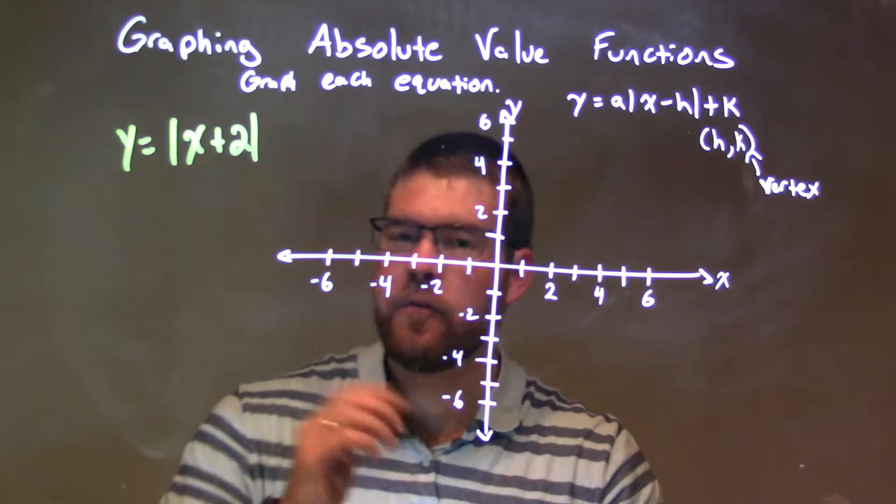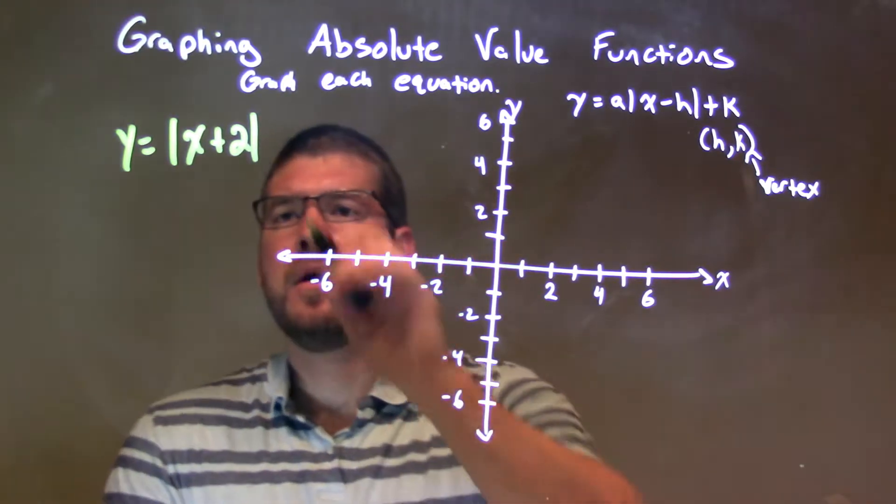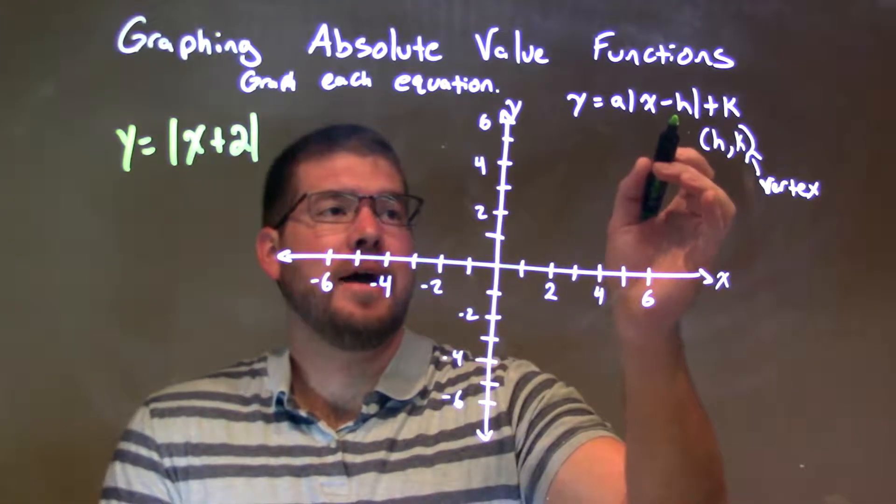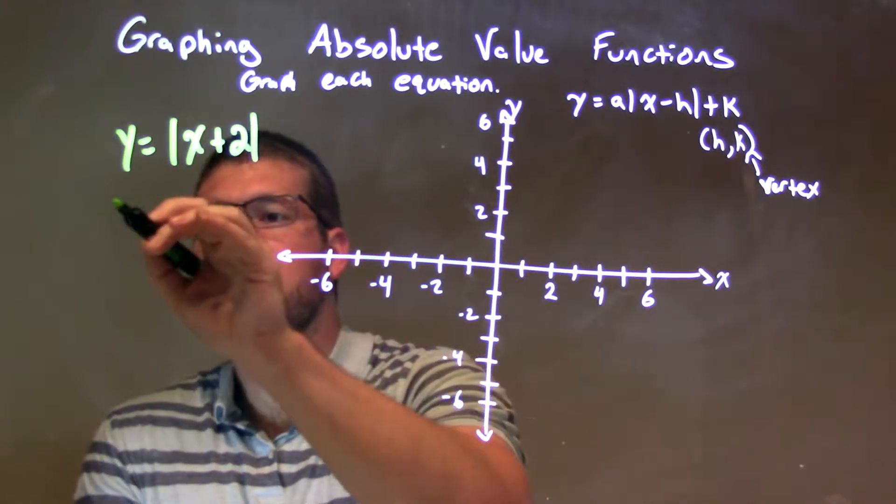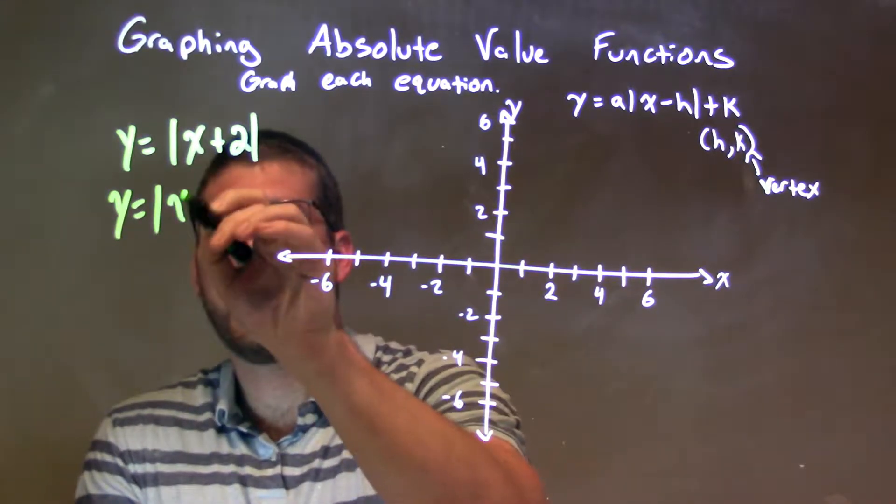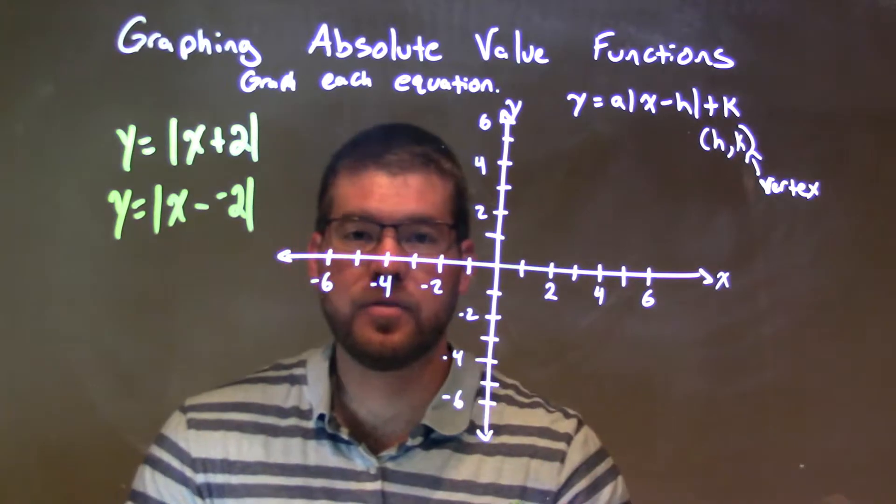Well, the first thing I always want to do is find my vertex. So, the vertex is the form of x minus h. So, I can rewrite this as the absolute value of x minus negative 2. Same thing as plus 2, but now I know my h value is negative 2.